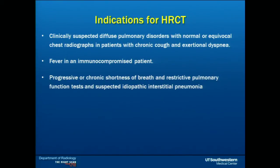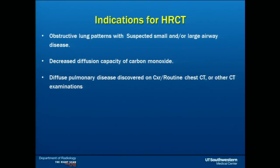What are the indications for high-resolution chest CT? It is mainly used for patients who have chronic cough and exertional dyspnea with clinically suspected diffuse pulmonary disorders and normal or equivocal chest radiographs. It is also used to evaluate fever in an immunocompromised patient, and for progressive or chronic shortness of breath with restrictive pulmonary function tests and suspected idiopathic interstitial pneumonia. It is also very useful in evaluating obstructive lung patterns with suspected small or large areas of disease.